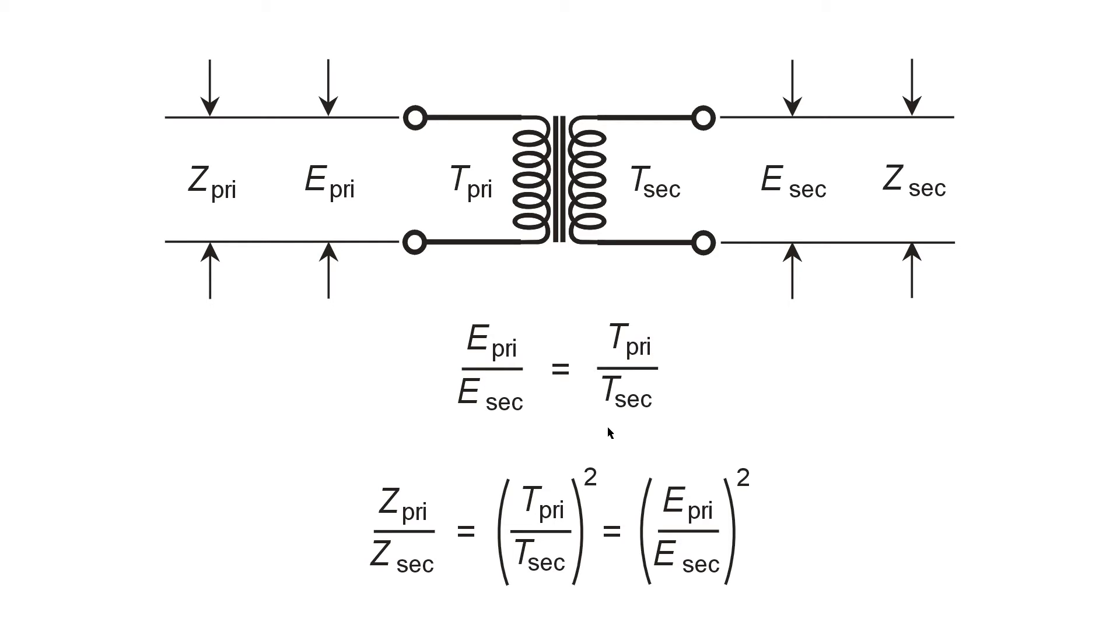On the other hand, if you intend to transform an impedance to something either more or less, Z being impedance and E being voltage, in case you haven't figured that out already, and T meaning turns, then the impedance transformation ratio equals the square of the turns ratio, or the square of the voltage transformation ratio.